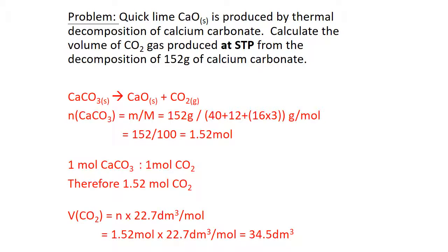The equation is: calcium carbonate gives calcium oxide and carbon dioxide — a one-to-one ratio. Number of moles of calcium carbonate is mass divided by molar mass: 152 divided by 100, giving 1.52 moles. One mole of calcium carbonate gives one mole of carbon dioxide, therefore 1.52 moles of carbon dioxide is created. Volume of carbon dioxide is 1.52 moles times 22.7 dm³/mol, giving 34.5 dm³ of carbon dioxide.